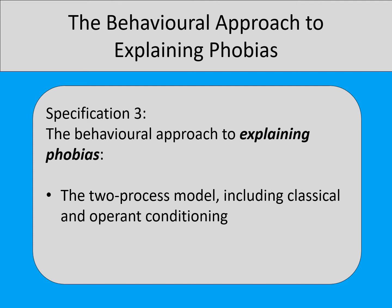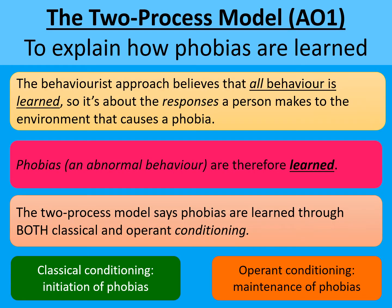This is a revision video for the behavioural approach to explaining phobias. The specification identifies you should know the two-process model including classical and operant conditioning. The behaviourists' basic assumption is that all of our behaviours are learned, and so therefore phobias are learned. It's our response to something in the environment which causes a phobia. Classical conditioning initiates the phobia and operant conditioning maintains the phobia.